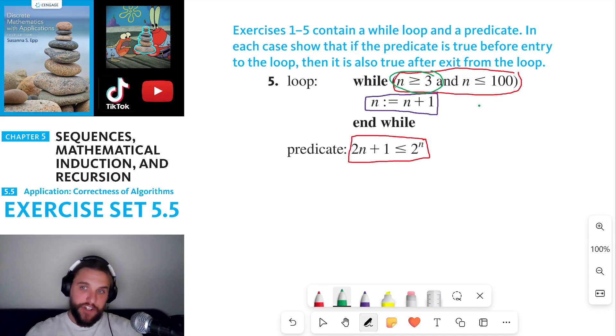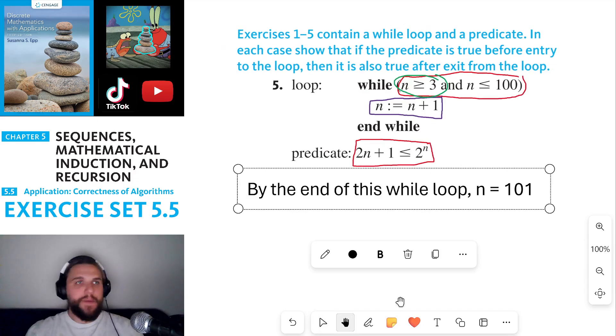Now, if n is an integer, which I think it's assumed to be an integer, then that would mean that n would equal 100 at the end of this while loop. So that means by the end of this while loop, n equals 101.